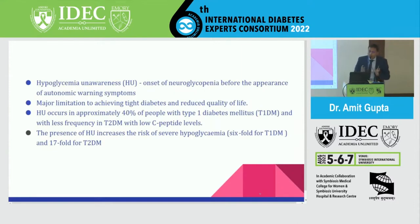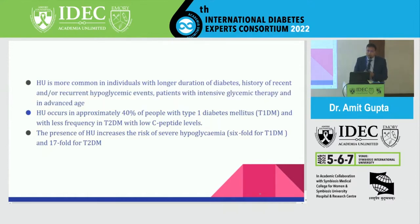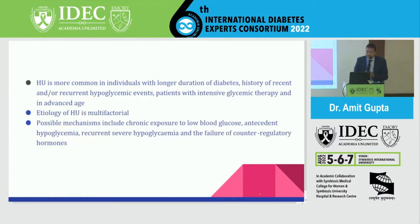Who is more likely to develop hypoglycemic unawareness? Anyone with long-standing diabetes and a history of recurrent hypoglycemic episodes. Patients on intensive glycemic therapy — those taking insulin, multiple daily insulin injections, or sulfonylureas — are more likely to experience hypoglycemia. The etiology of HU is multifactorial: chronic exposure to low blood glucose, antecedent hypoglycemia, recurrent severe hypoglycemia, and failure of counter-regulatory hormones.